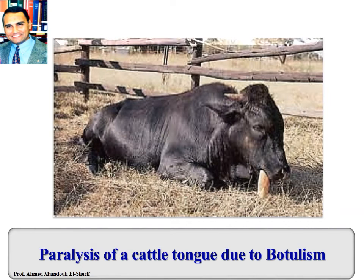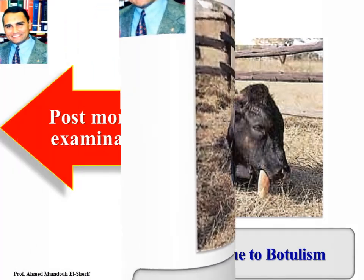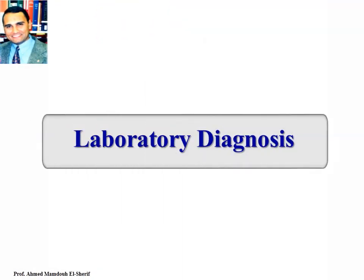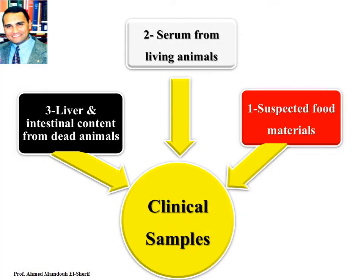Typical signs of a case: lying on the brisket with head aside and paralysis of the tongue due to botulism in cattle. Post-mortem examination in cases of animals with botulism shows non-specific lesions. Laboratory diagnosis: clinical samples include suspected food materials, serum from living animals, and liver and intestinal content from dead ones.